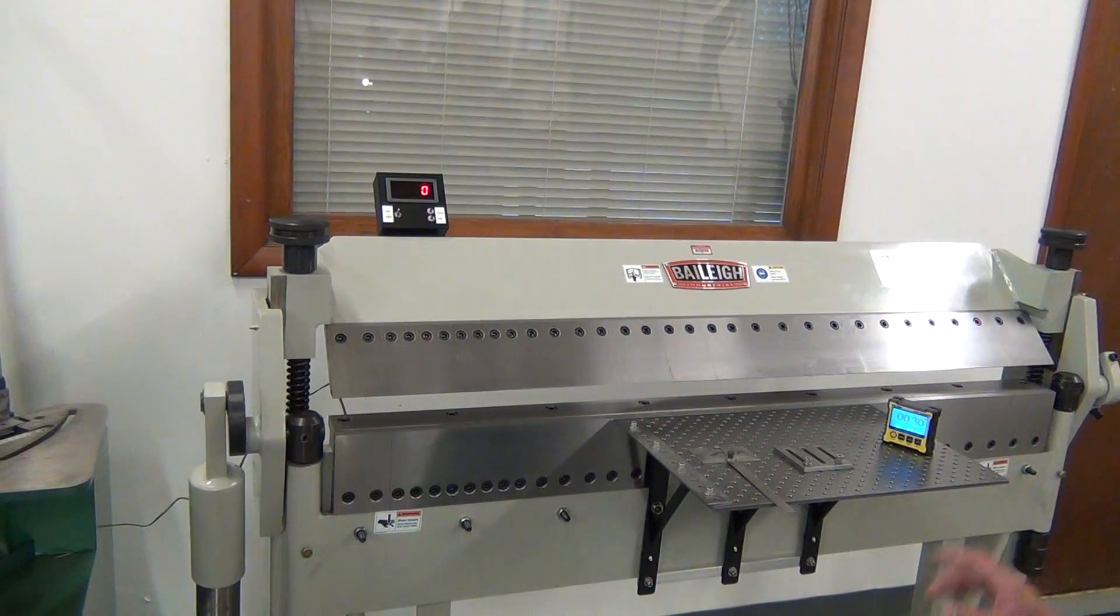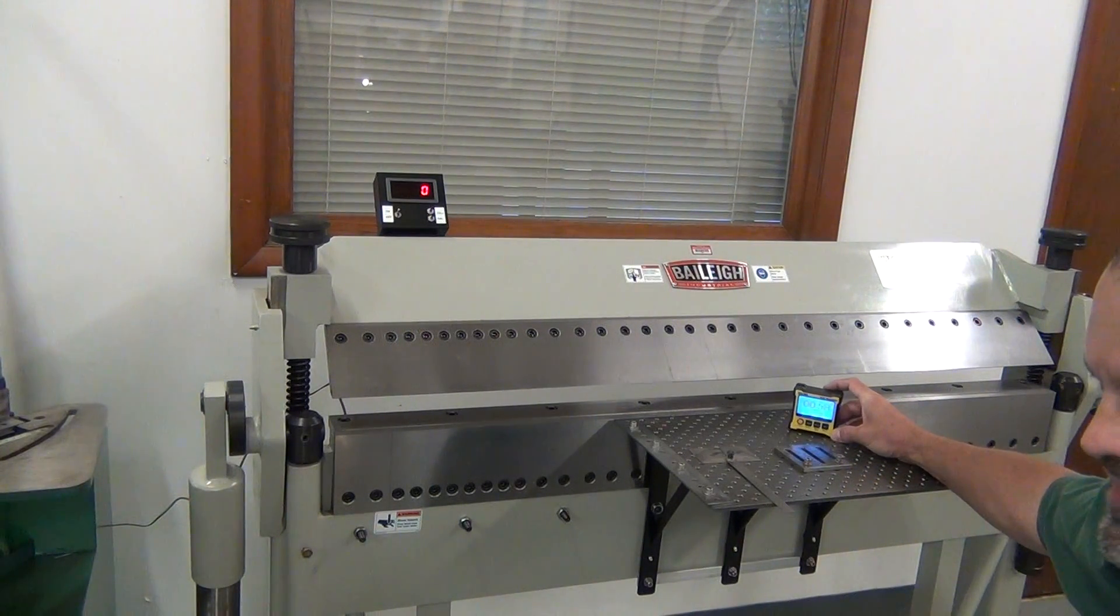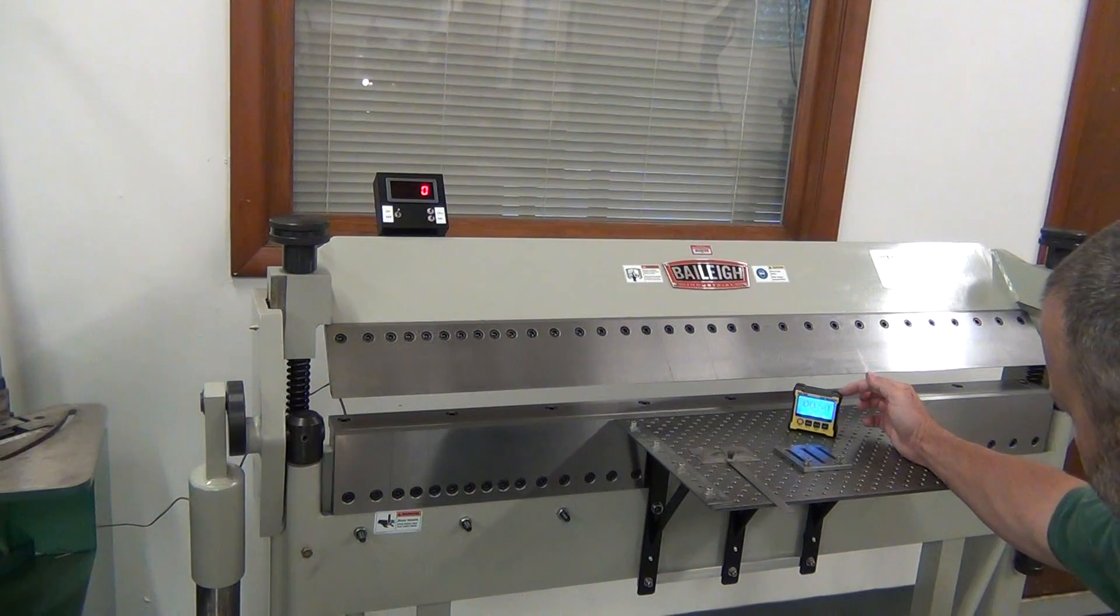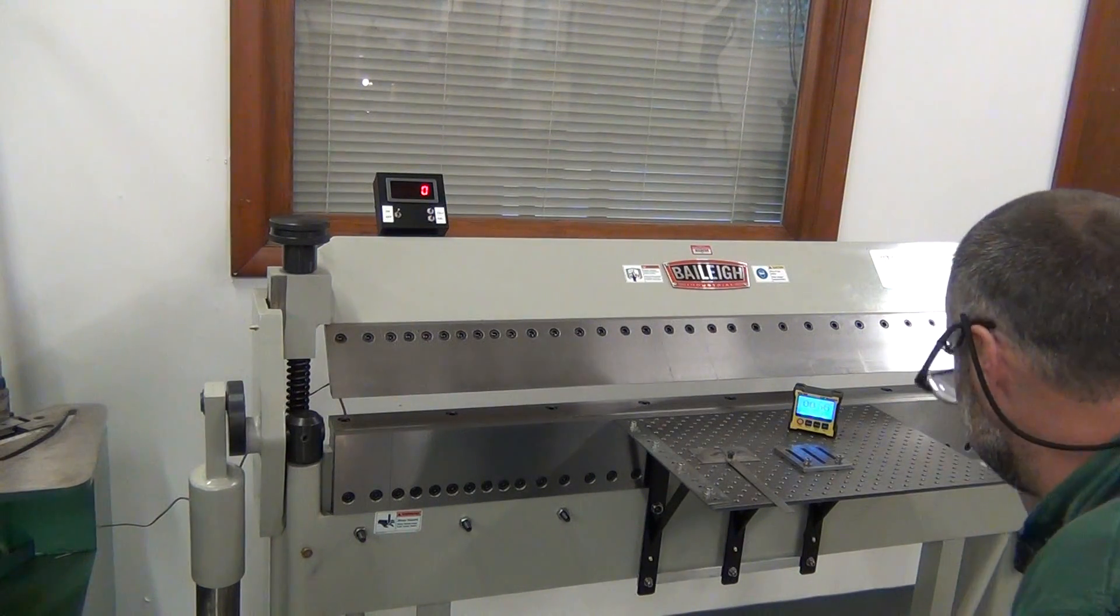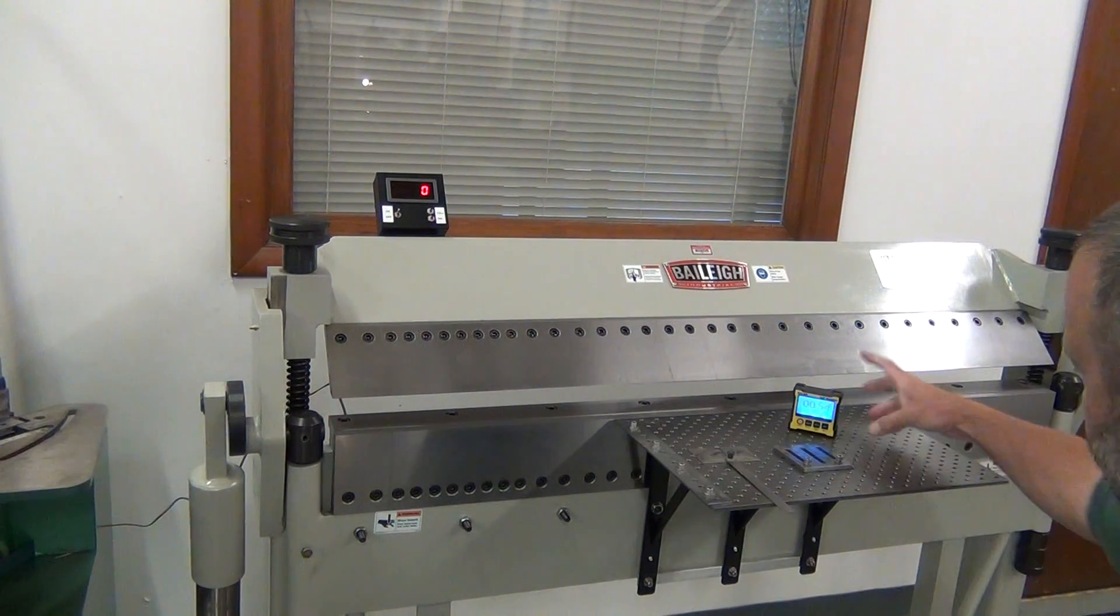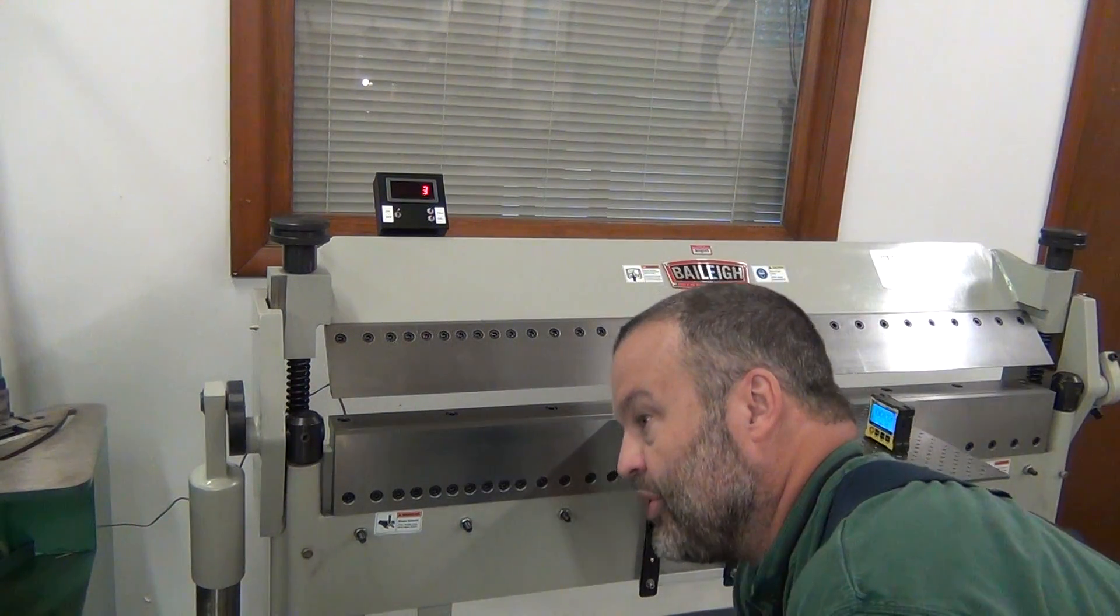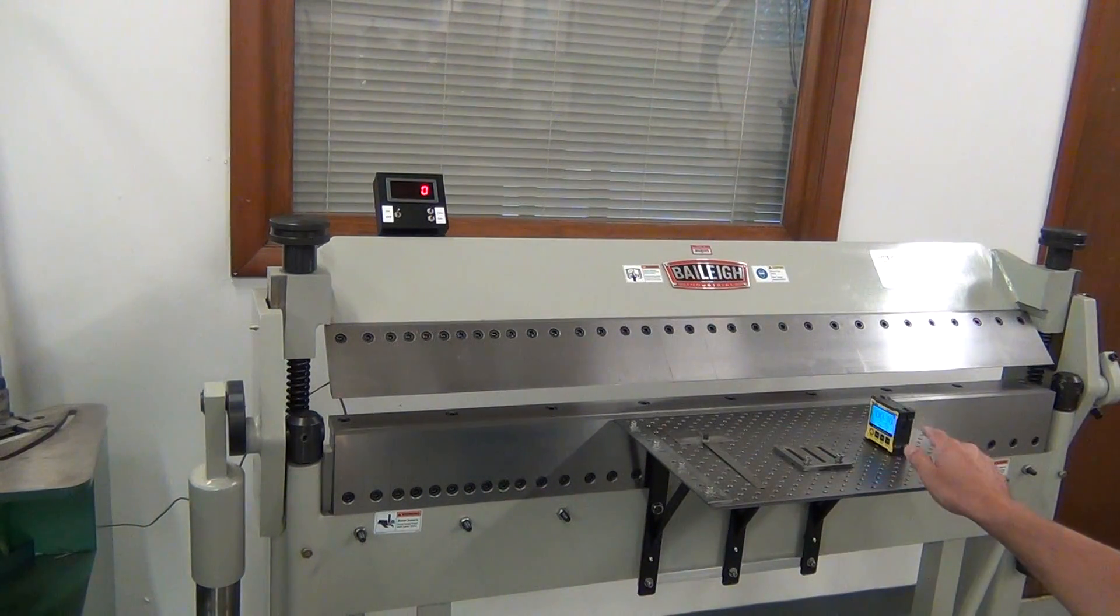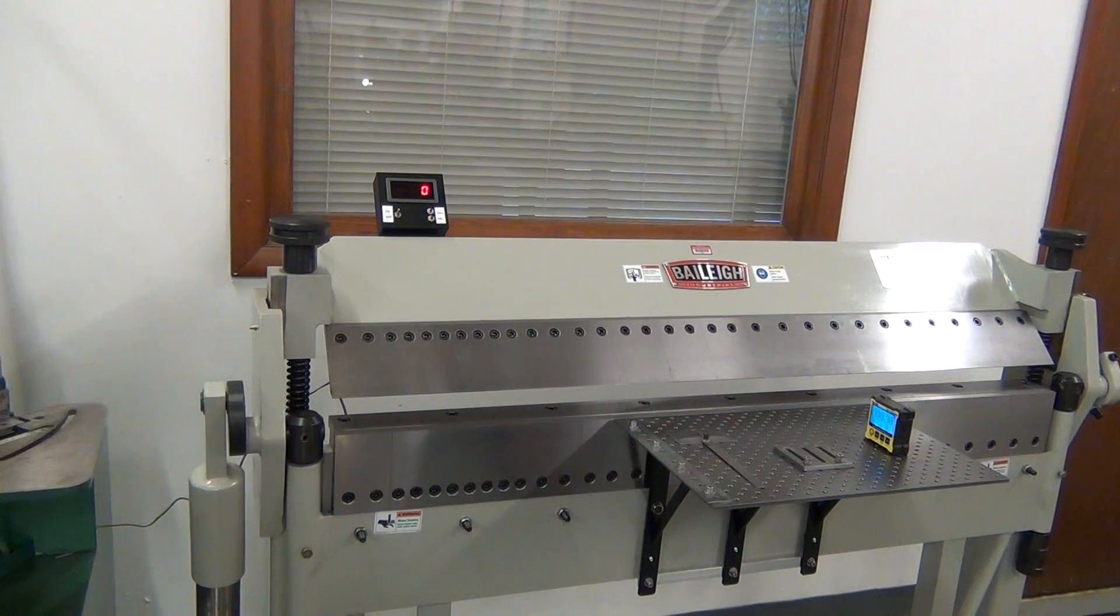I found on the internet, very interesting and not expensive at all, these digital protractors. Some of you may have seen these already—this is a two-axis model, it's a DXL360. So the idea was I just put this on the platen here and then I could measure the angle of the bend when I pull the bend up.